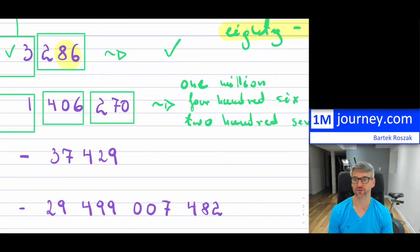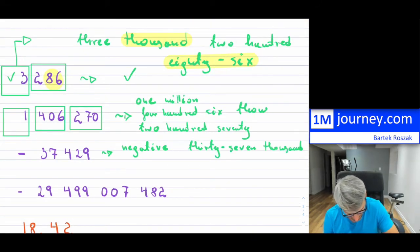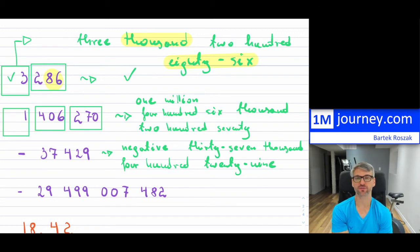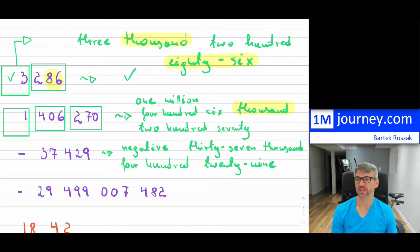The next example is negative, so I would say negative 37 thousand, then continue with 429. I would hyphenate two things: the 37 and then put thousand after it, and hyphenate the 29. Written out: negative thirty-seven thousand four hundred twenty-nine. Notice 37 was hyphenated and 29 was hyphenated - you hyphenate in every single triad. Also note: don't forget to put the triad name 'thousand' after the first triad.